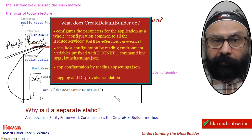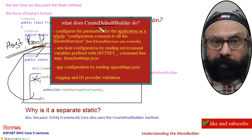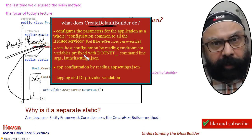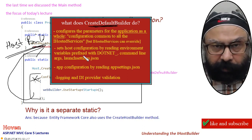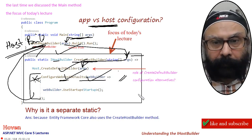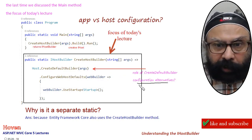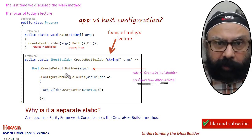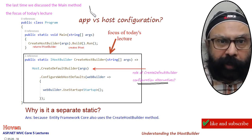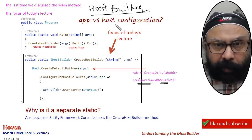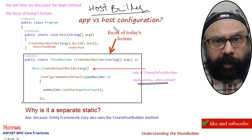Now the question arises — can we do modifications to this method? Like, this is the default one. Can we do some modifications, can we customize it? Let me show that also — configuration alternatives. Basic customization is going to be about creation of a HostBuilder object, and then setting all the configuration through individual method calls.